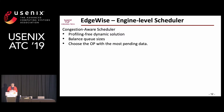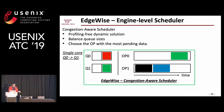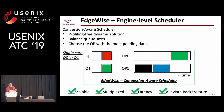We propose a congestion-aware scheduler used by Edgewise. It is a profiling-free dynamic solution. The key idea is to balance queue sizes to avoid unnecessary back pressure. Every time it makes a scheduling decision, it chooses the operation with the most pending data to schedule first. Using the earlier example: when Queue 1 has more data, it is scheduled first; when a new item arrives and Queue 0 has more data, Queue 0 is scheduled next, putting the result into Queue 1. By balancing queue sizes, we alleviate back pressure and achieve lower latency when the system is saturated.